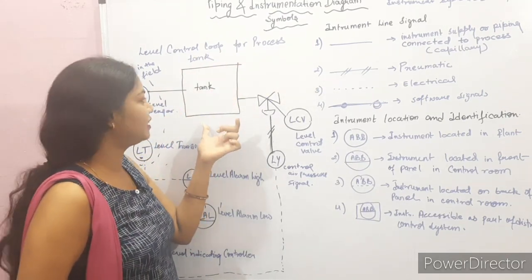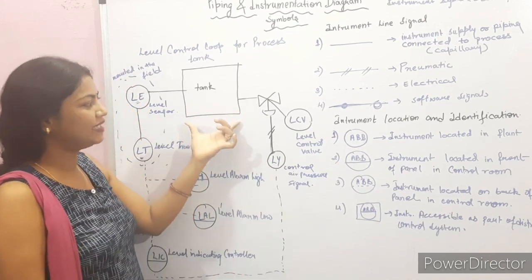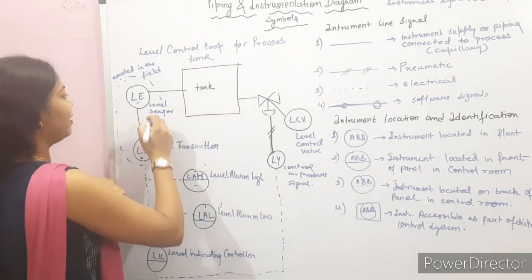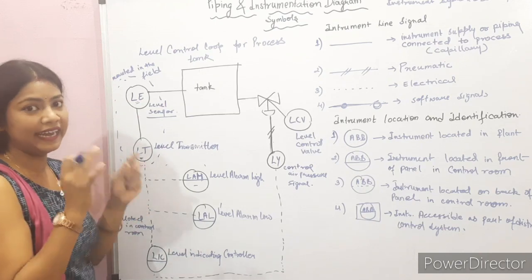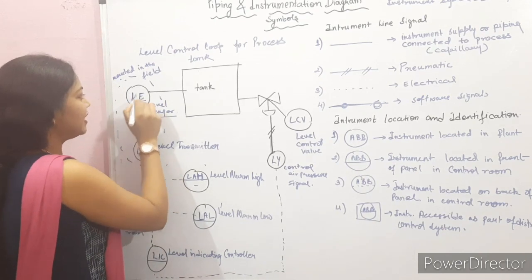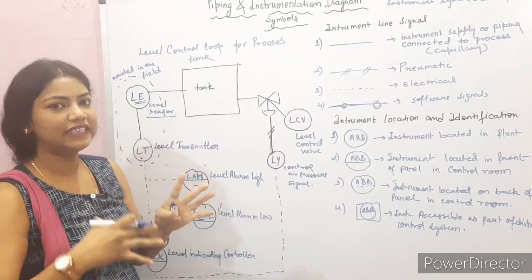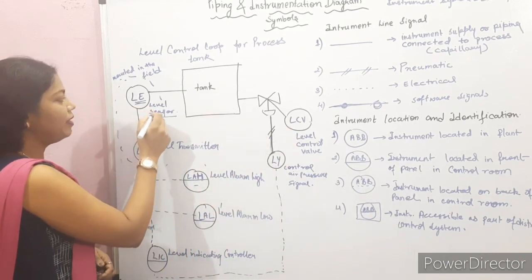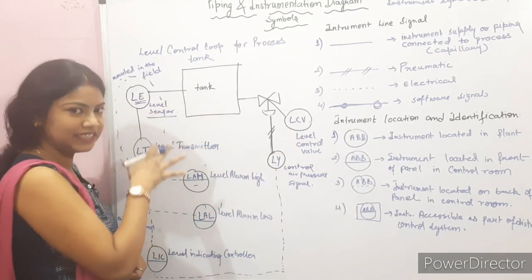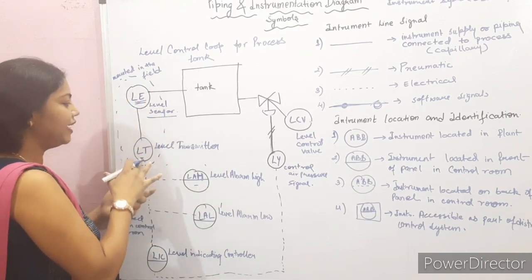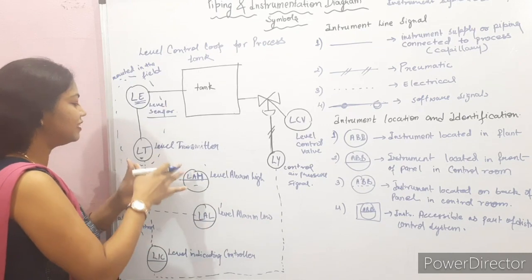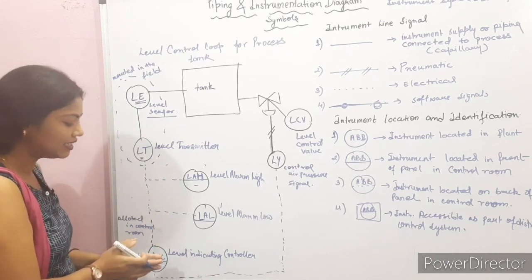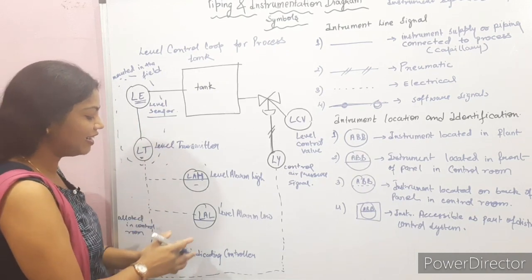We have a tank and we have to control or measure the level of this tank with the help of a sensor. Here we have the level sensor, represented as LE. The level sensor sends signals to the level transmitter. The level transmitter receives the signal, converts it to an electrical signal, and sends it to the level indicator controller.